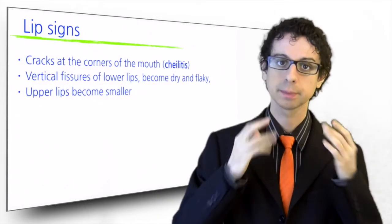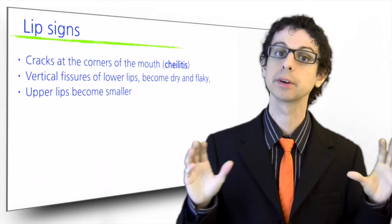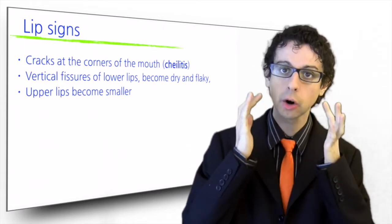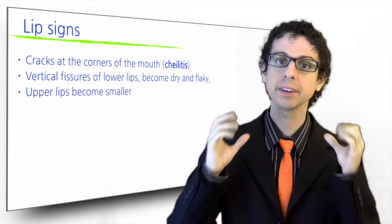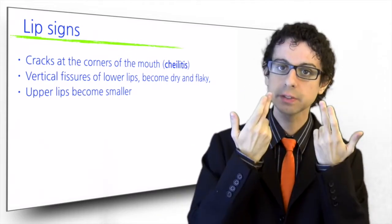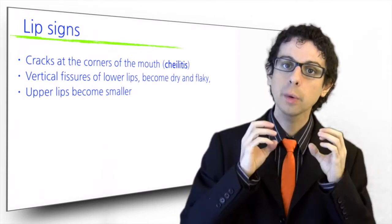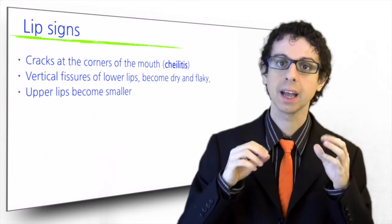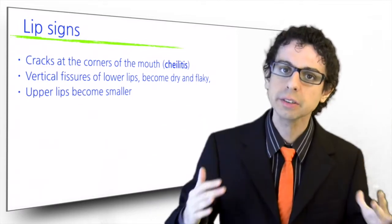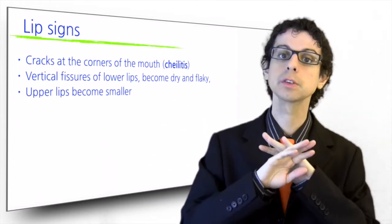Let's move on to the lips. The landmark sign of B vitamin deficiency, and particularly B2, is angular cheilitis, painful cracks at the corner of the mouth that reopen every time we open our mouth wide. Before it comes to that, small vertical fissures of the lower lips are also a sign of B vitamin deficiency. The lower lip becomes dry and flaky, the upper lips instead become smaller. In many older adults, as a result of years of marginal vitamin B deficiency, the upper lip has almost completely disappeared.